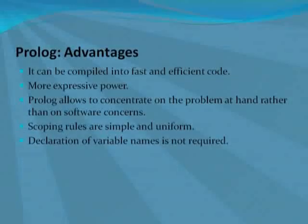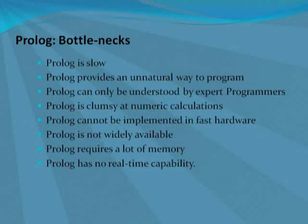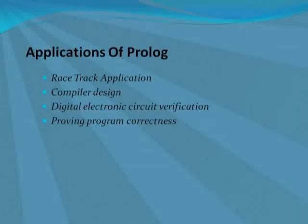Prolog has many advantages. Some of the main ones are: it can be compiled into efficient code, it has more expressive power, and the declaration of variable names is not required. On the other hand, there are some bottlenecks as well: it is slow, it requires a lot of memory, and it does not have real-time capabilities. Prolog is well suited for applications such as racetrack applications, compiler design, digital electronic circuit verification, and proving program correctness.